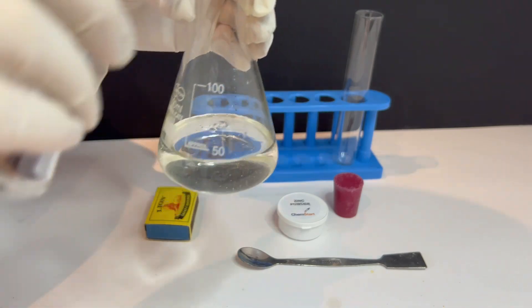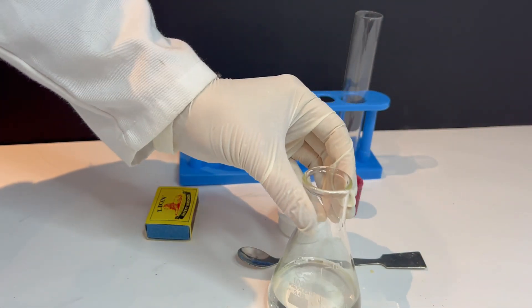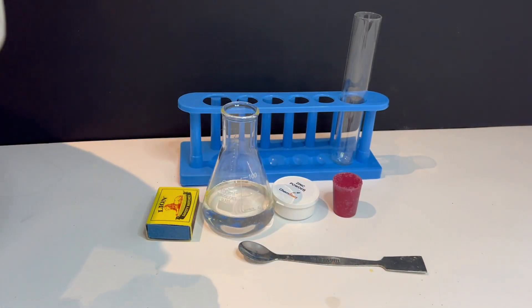The first step is to carefully pour some dilute hydrochloric acid into the flask. Make sure that you are wearing safety goggles and gloves and that you are working in a well-ventilated area.